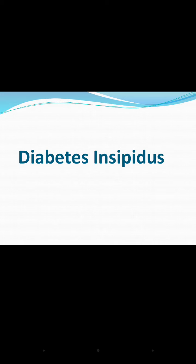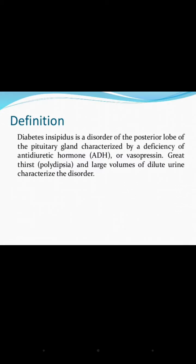Good morning. This session is for BSc nursing second year students, and the topic is diabetes insipidus. Diabetes insipidus is a disorder of the posterior lobe of the pituitary gland, characterized by the deficiency of antidiuretic hormone (ADH) or vasopressin, great thirst (polydipsia), and large volumes of dilute urine.